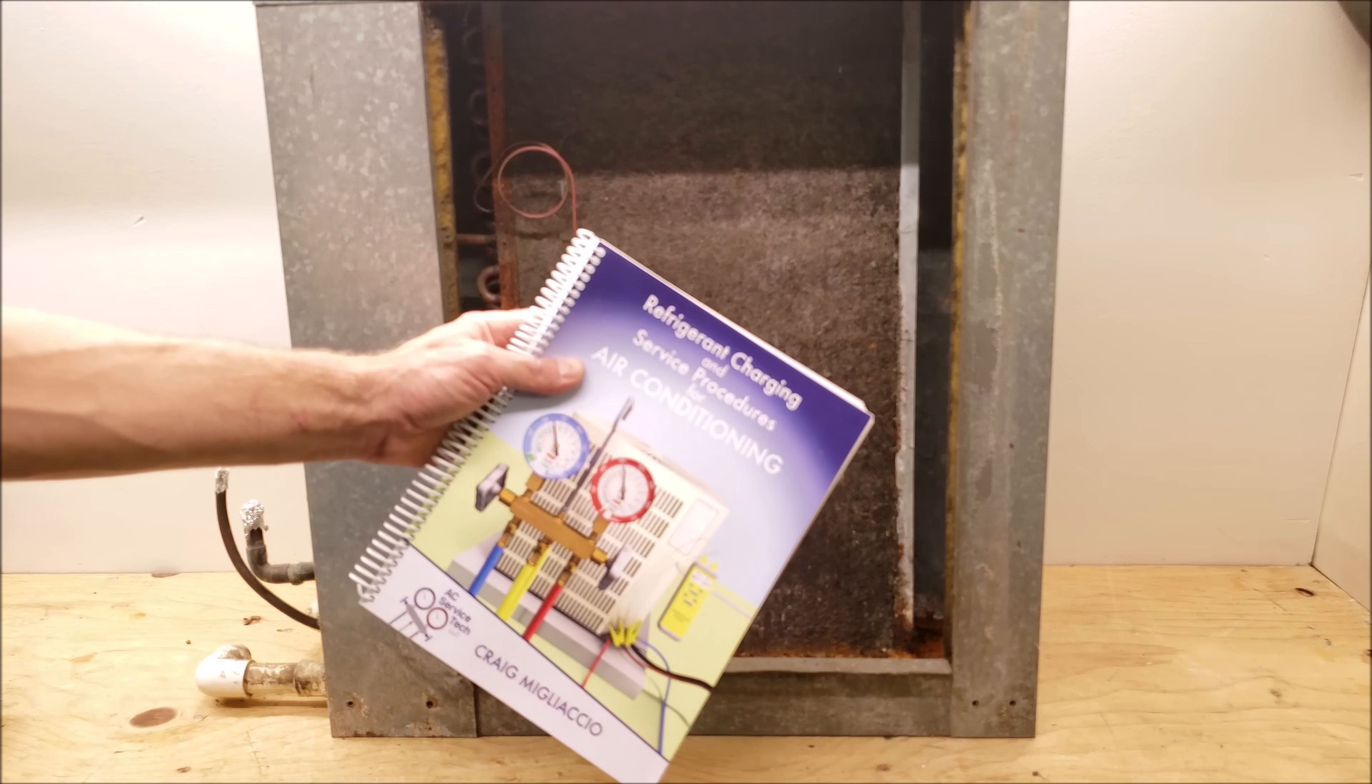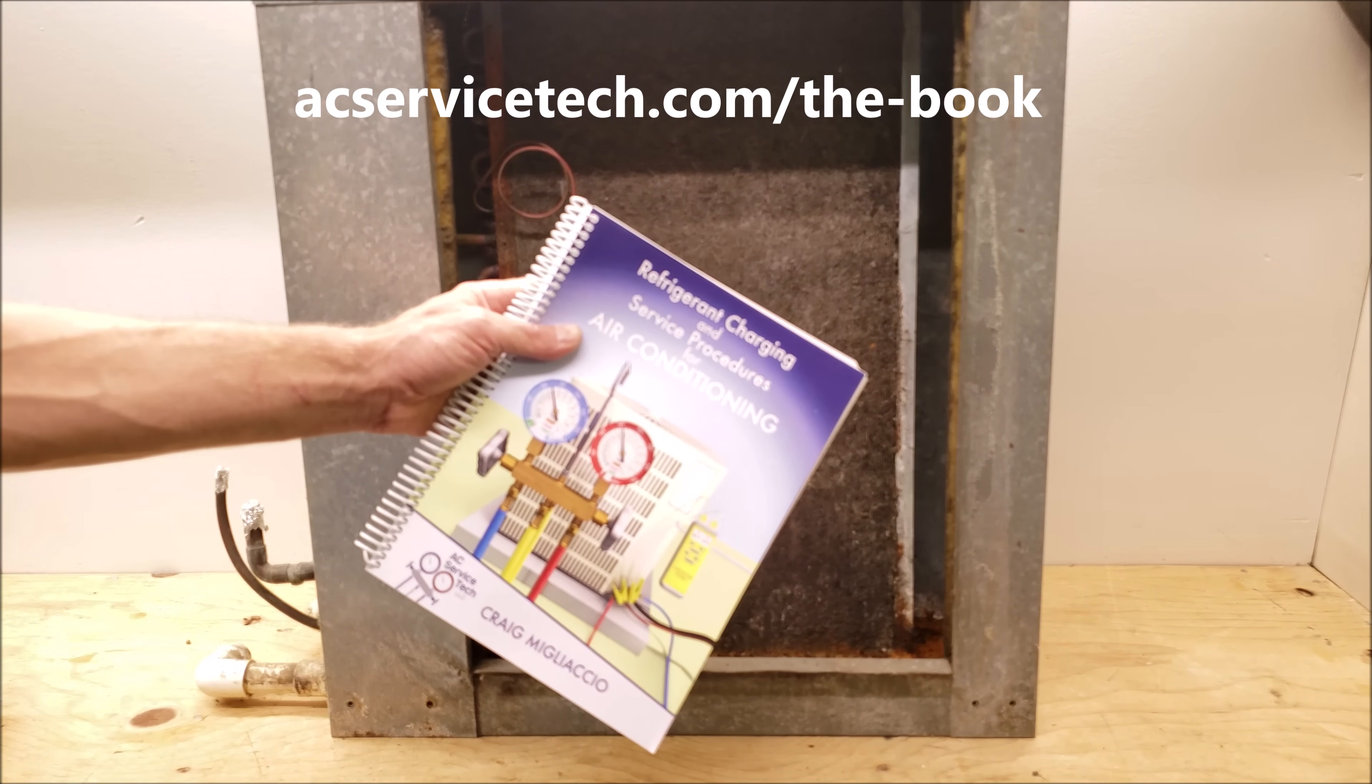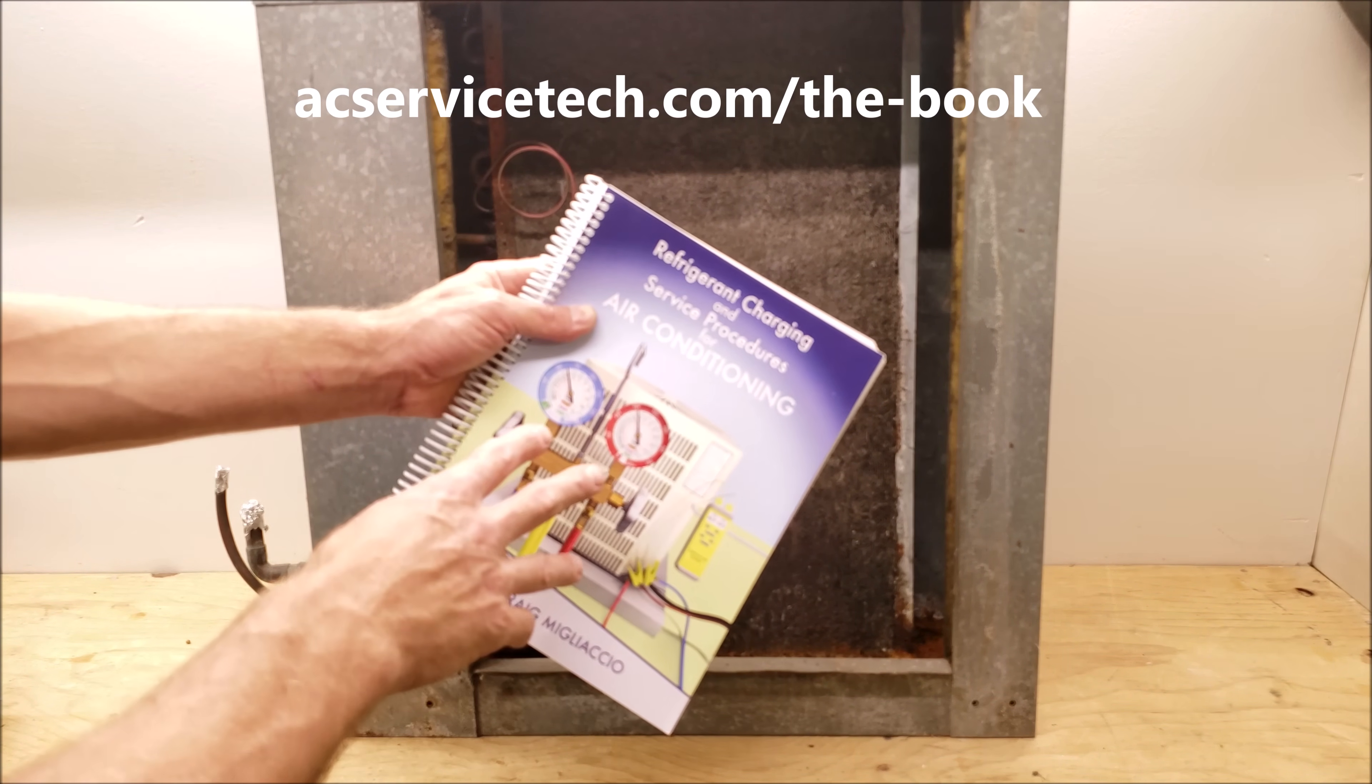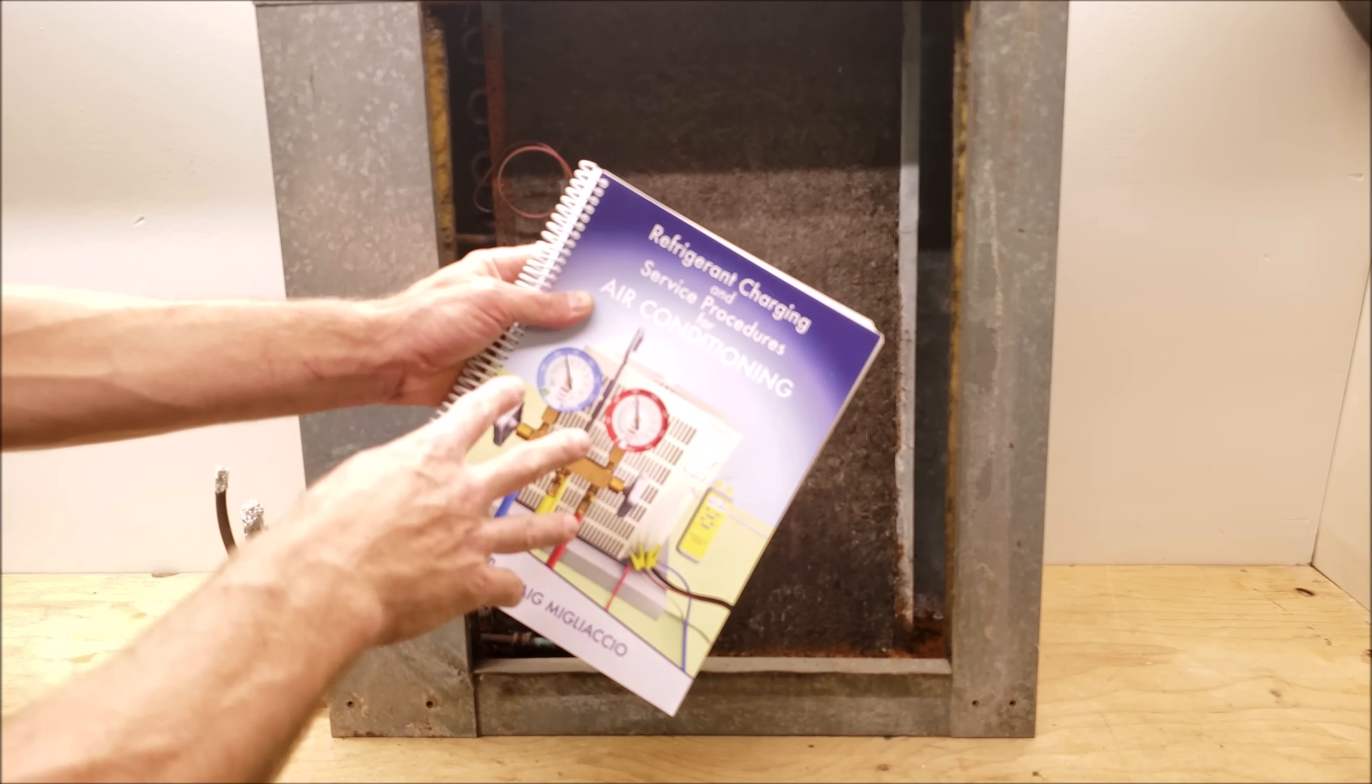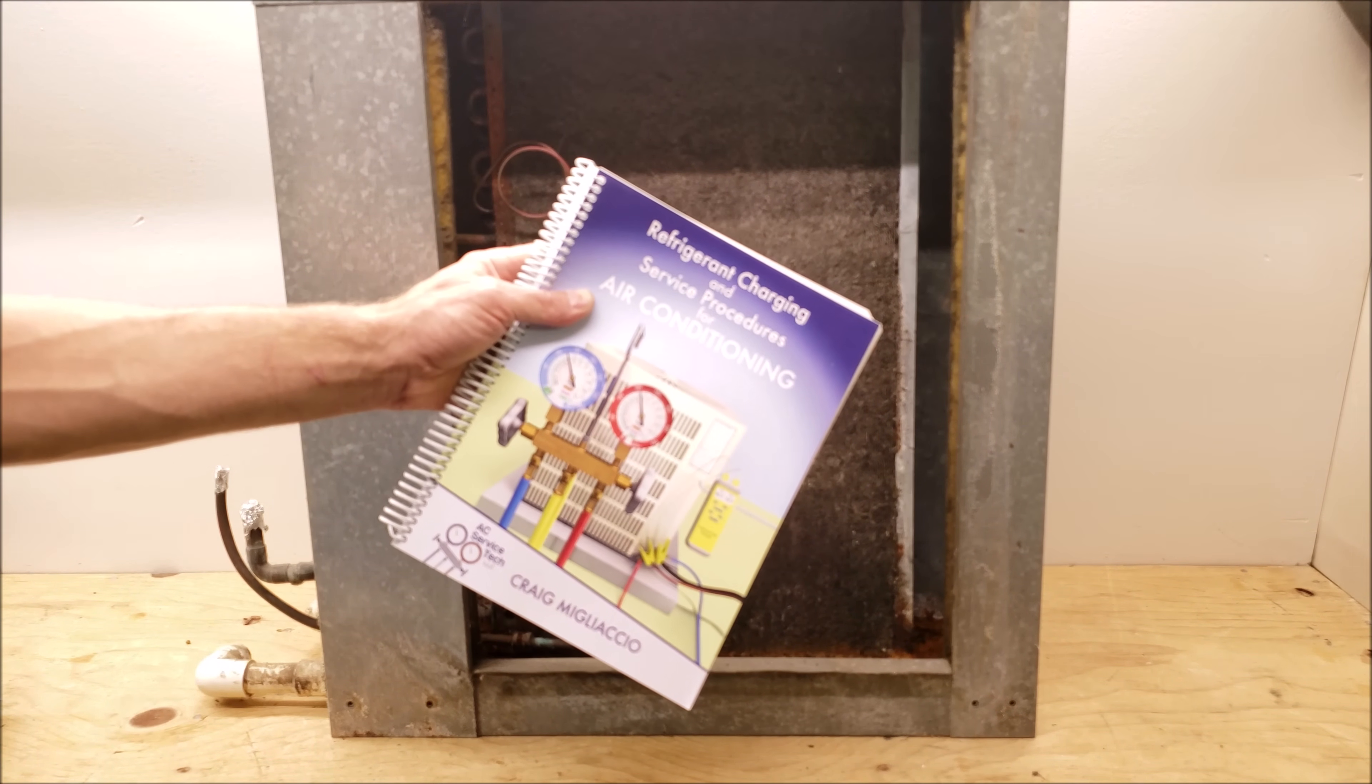If you want to learn more about troubleshooting airflow problems, check out our book, The Refrigerant Charging and Service Procedures for Air Conditioning. In this book, we'll go over the preparation of a system for refrigerant, checking the refrigerant charge, and also troubleshooting using the gauge set. We have the book and the full outline available over at acservicetech.com. Hope you enjoyed yourself and we'll see you next time at AC Service Tech's channel.